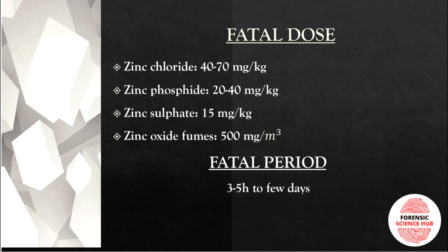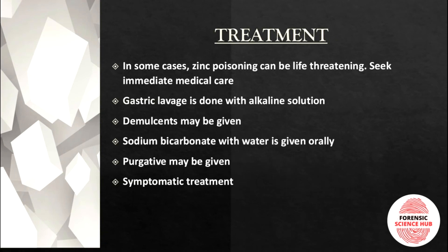Regarding fatal doses: zinc chloride is 40–70 mg/kg; zinc phosphide is 20–40 mg/kg; zinc sulfide is 15 mg/kg; and zinc oxide fumes are 500 mg per cubic meter. The fatal period may range from 3 to 5 hours to a few days.